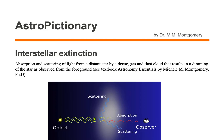Interstellar extinction is the absorption and scattering of light from a distant star by a dense gas and dust cloud, which results in a dimming of the star as observed from the foreground.